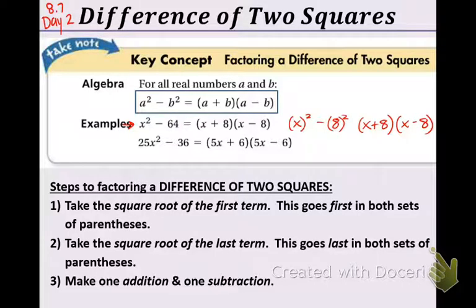This next one is a little bit harder, but still not too bad. Let's look at it. 25x squared is just 5x to the second, and then 36 is 6 squared. So now what you do is you just take the 5x and the 6 and add them, and take the 5x and the 6 and subtract them.